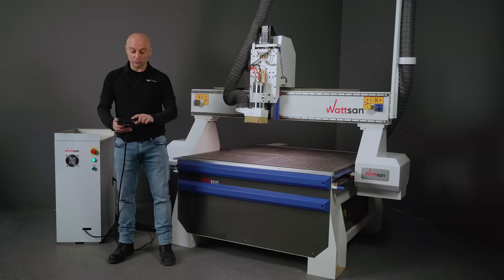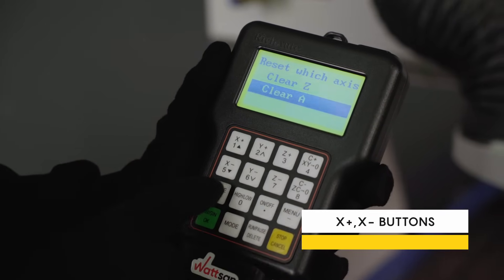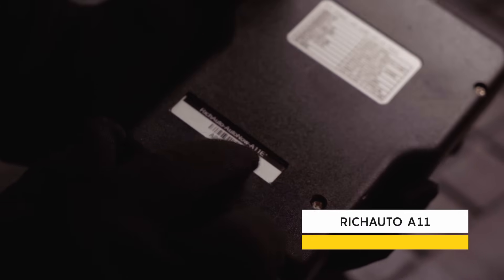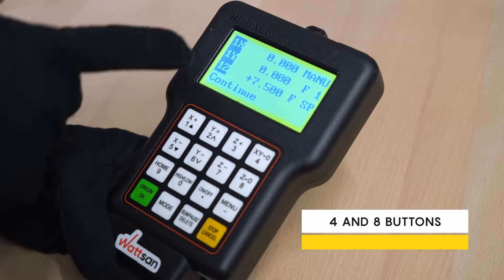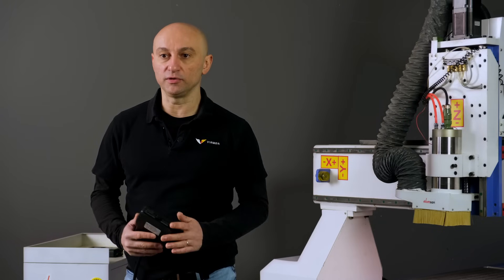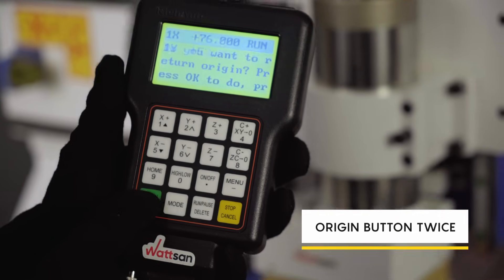To scroll into the menu, you can use the buttons X Plus and X Minus. In the version Rich Auto A11, the buttons 4 and 8 will allow you just to set the zero point for all axis.